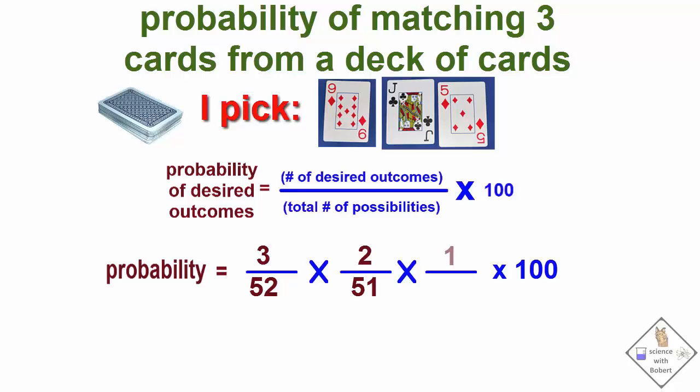With the third choice, there is one desired outcome left and 50 cards left in the deck.